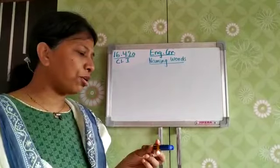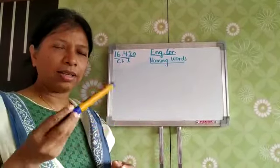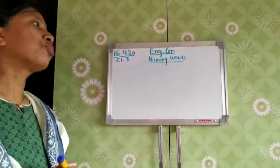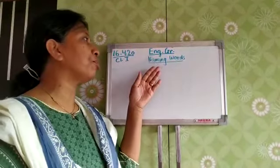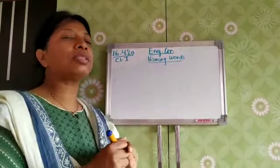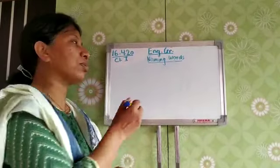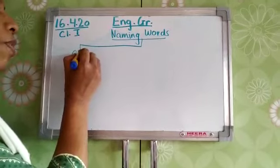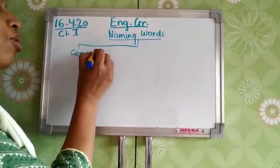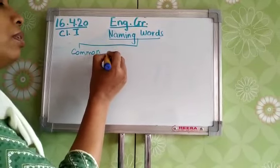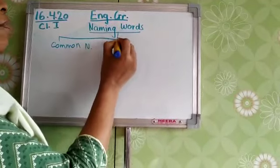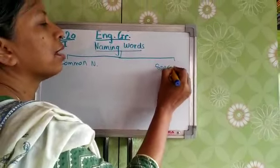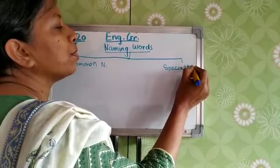If I tell you pencil, this is a pen — this is a common noun. Today I am going to tell you that there are two kinds of naming words. One is common naming words and the other is special names.